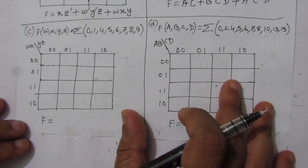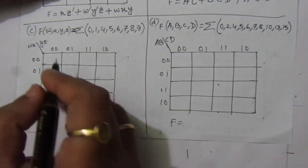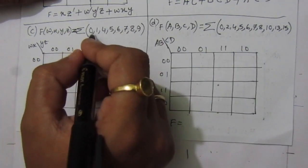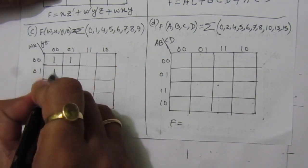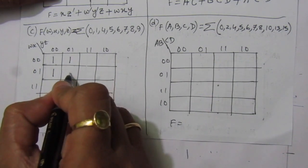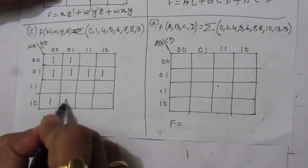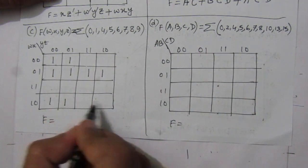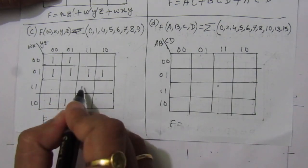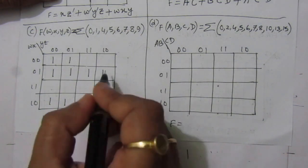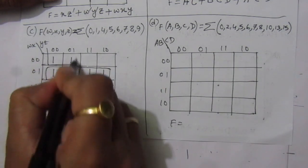Now the third part of the problem. We are given this sum of minterms expression, and we place the one values in the map: 0, 1, 2, 3, 4, 5, 6, 7, 8, 9, 10, 11, 12, 13, 14, 15. We then take combinations — this will be one combination, and this will be the second combination.